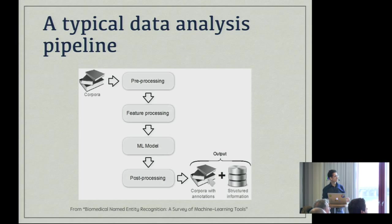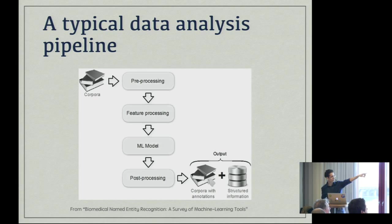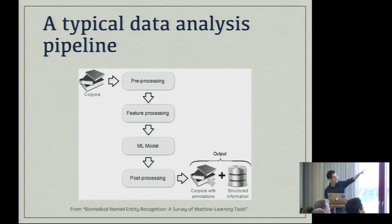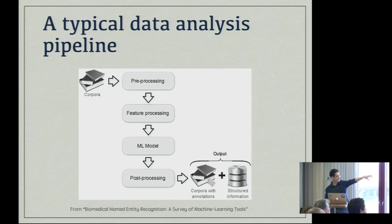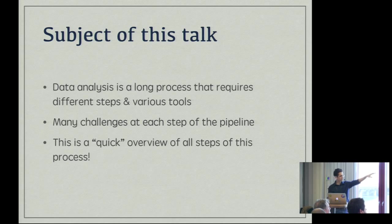What a typical data analysis pipeline looks like is this. This is an example from a paper about biomedical named entity recognition. You have input — that could be an image or a text document. You usually go through a pre-processing phase where you treat that data. Then feature extraction, where you extract the relevant data to feed to your statistical models. Models don't understand what an image is; you convert that to vectors. Then you feed it to a statistical model, and finally you get some result that you often post-process.